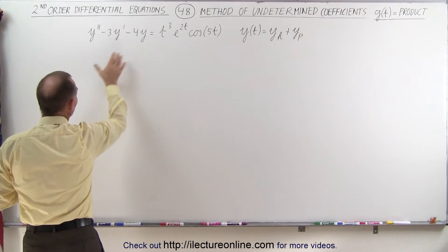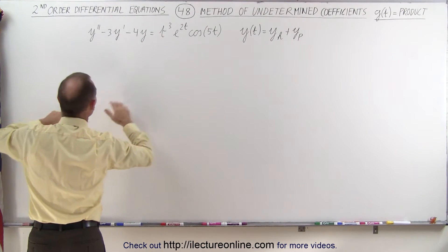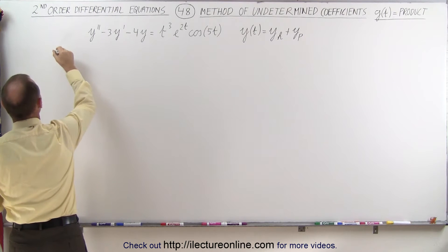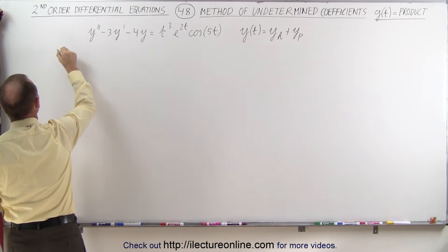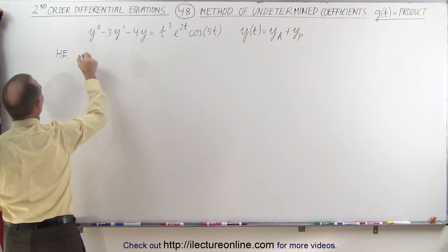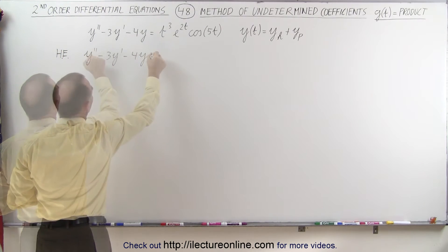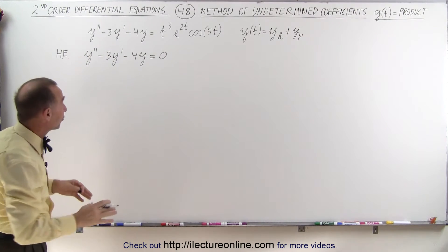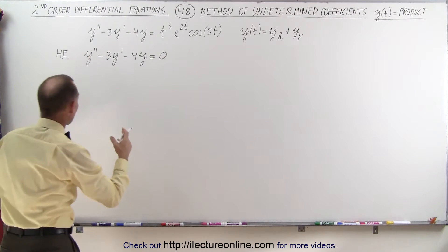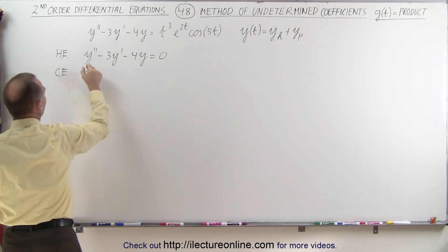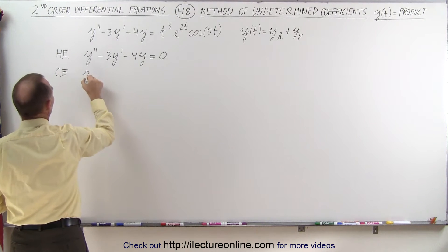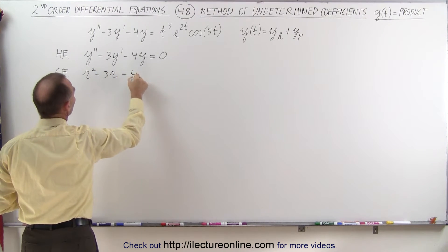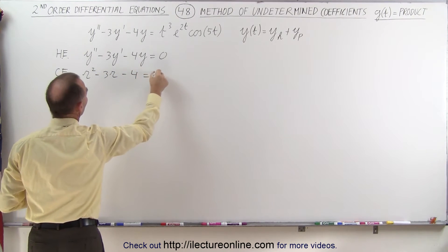So we're going to write this as a homogeneous equation and set it equal to zero on the right side. So the homogeneous equation will look as follows. And then, of course, we use the characteristic equation to try to find the roots. So we write r squared minus 3r minus 4 equals 0.